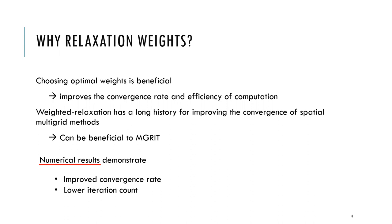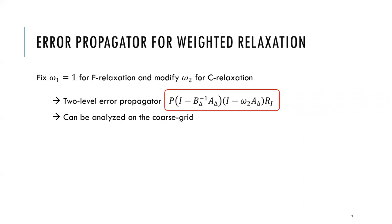Our numerical results demonstrate improved convergence rate and lower iteration count. Because we are interested in how good the approximate solution is compared to the exact solution, we want to know how error propagates from iteration to iteration. We fix omega_1 equal to 1 and modify omega_2.